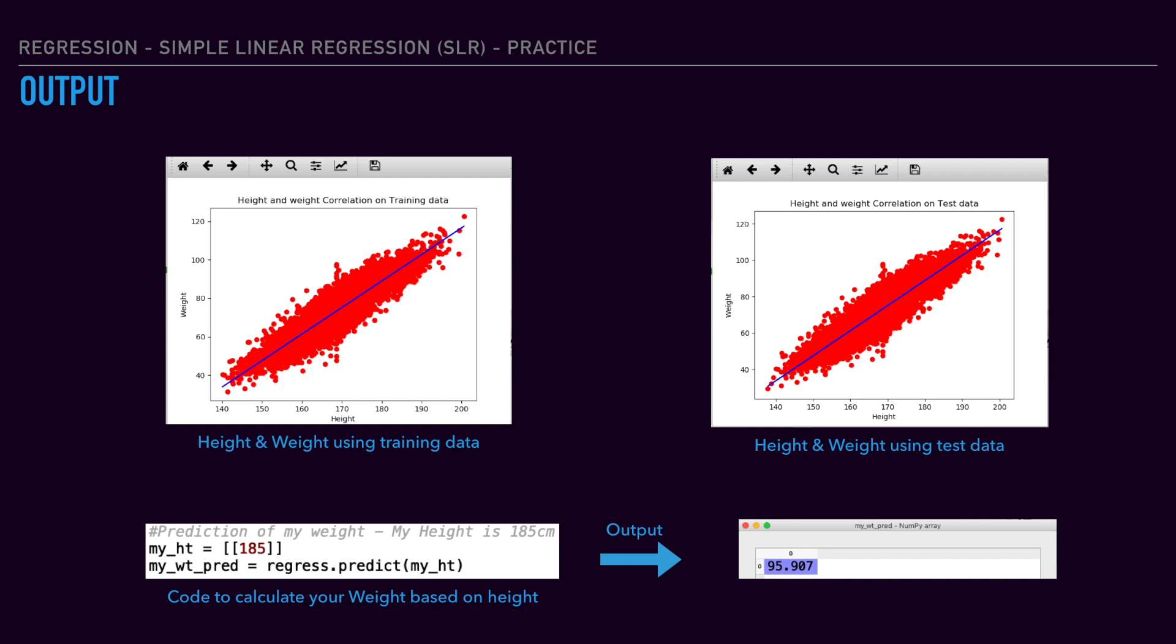So, you can see the same output. Just cross-verify it. If you have a code on the left, just for fun part. Now, we have already discussed how we can see the model. The height is 185. Now, the output is 95.907 kg.